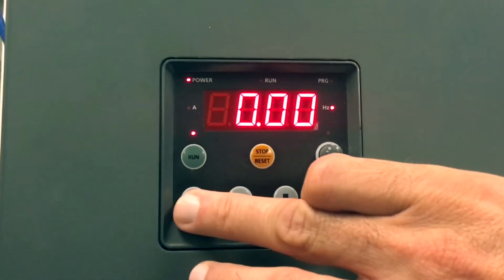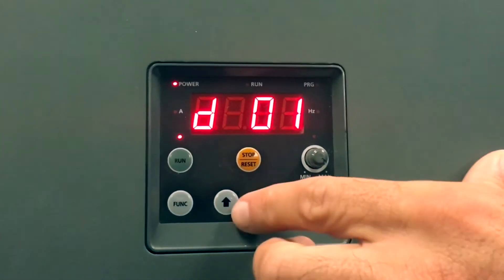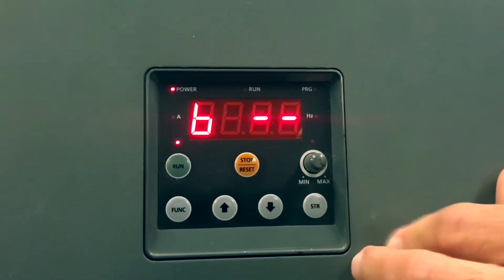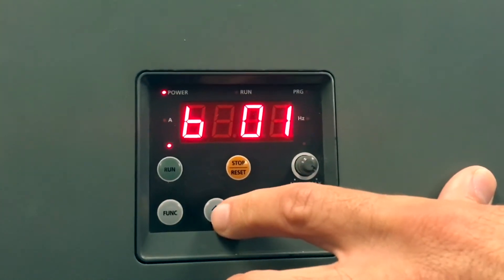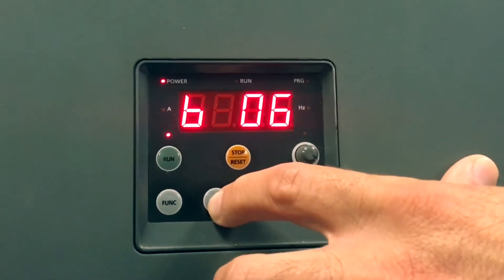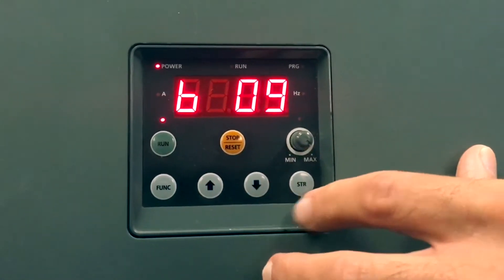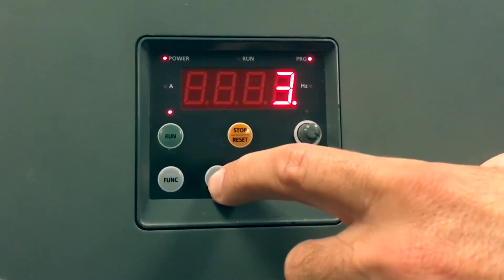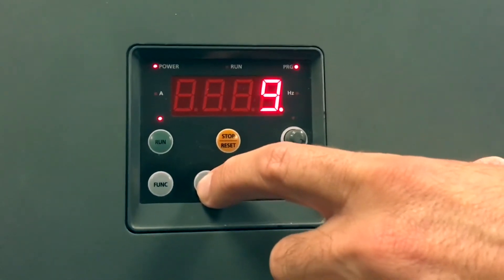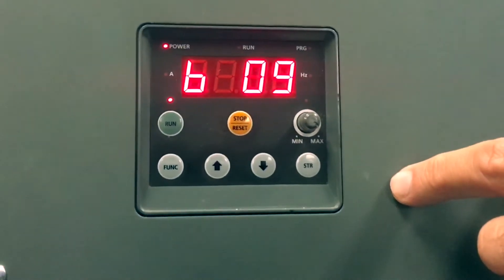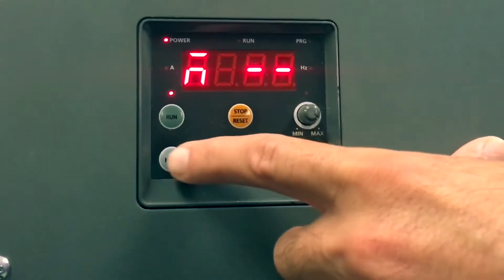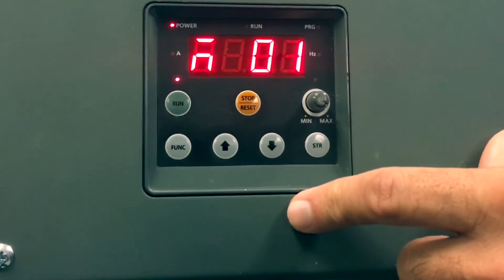In order to do this we must access our M parameters. Go to B09 first, set the value to 11, then press store. Now push function which will bring you to B dash dash. Simply click the up arrow to access M parameters.